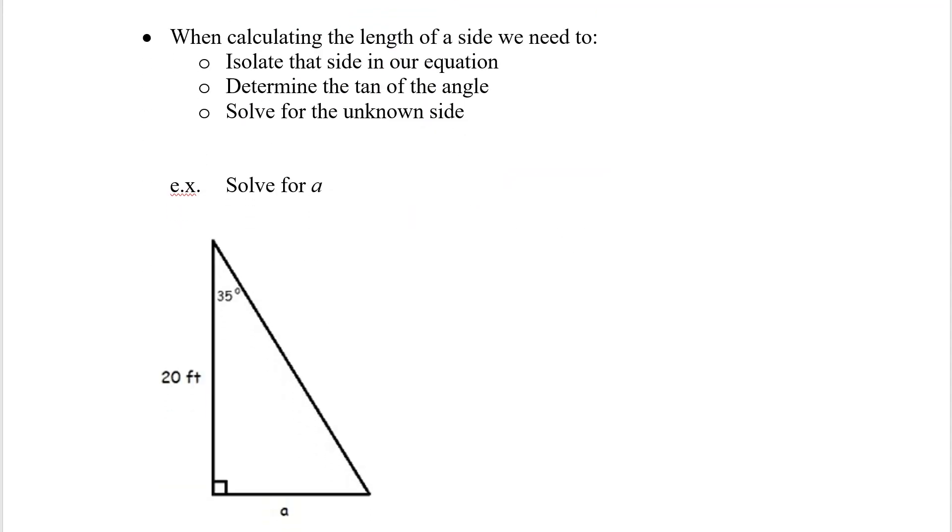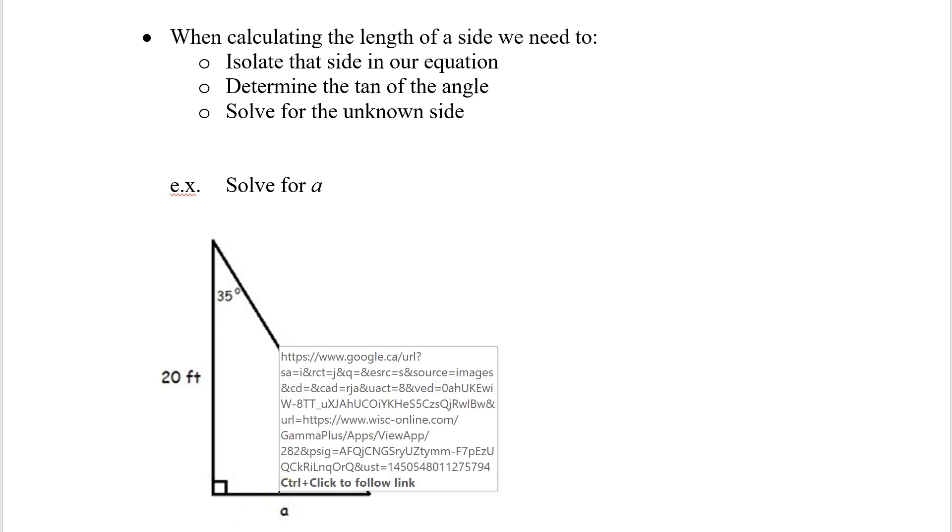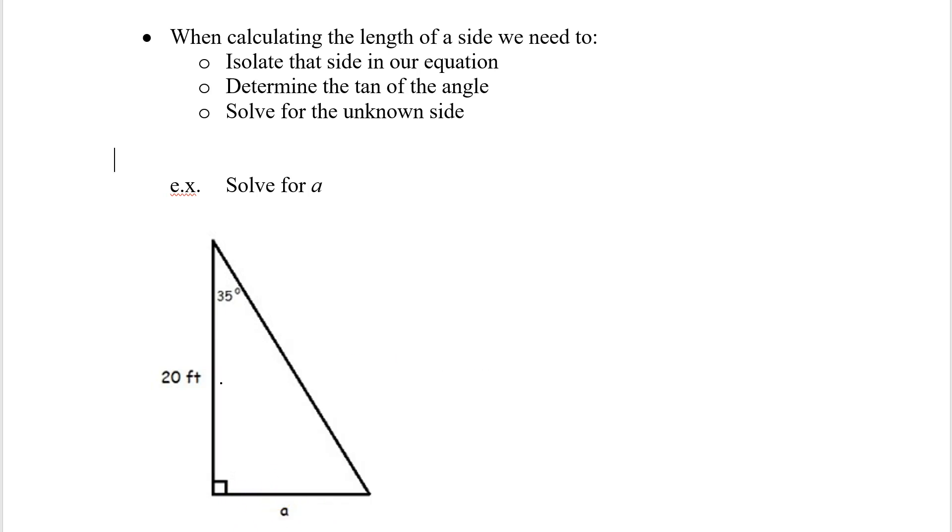We're going to solve for a. And of course, a is this side down here. So the first thing I do is I label my triangle. And what I'm talking about there is the adjacent, opposite, and hypotenuse. So the first thing I do is I figure out where my angle is. And in this case, my angle is sitting up here. So based on that angle, I need to figure out opposite, hypotenuse, and adjacent. I like to start with hypotenuse, because it's always across from my 90 degree angle. Here's my 90 degree angle. I go across. There's the hypotenuse.